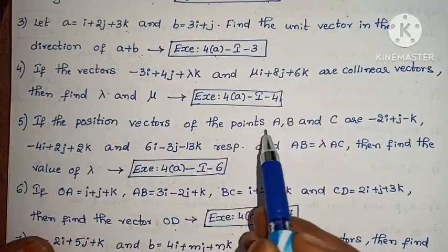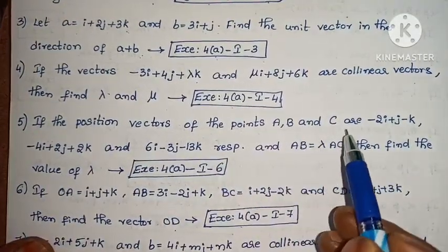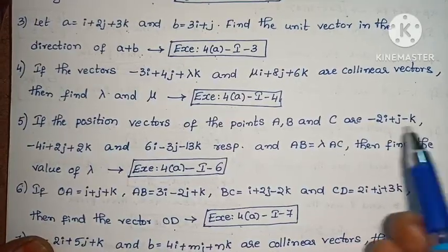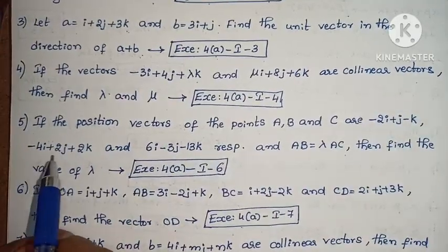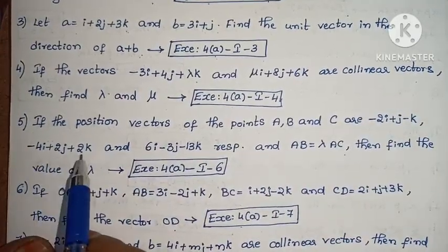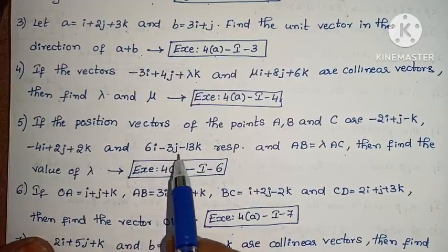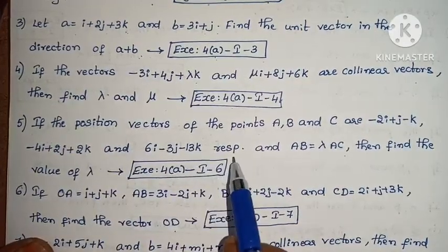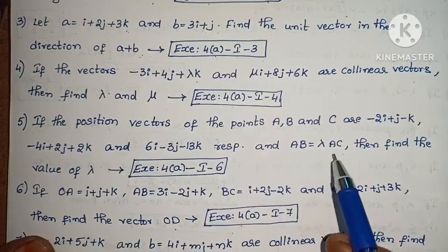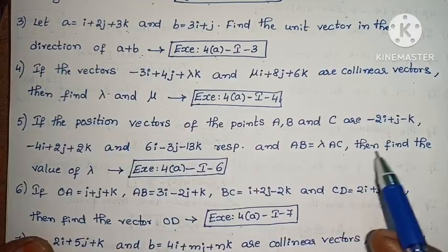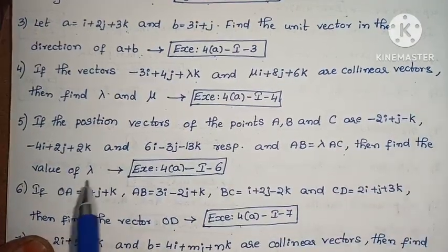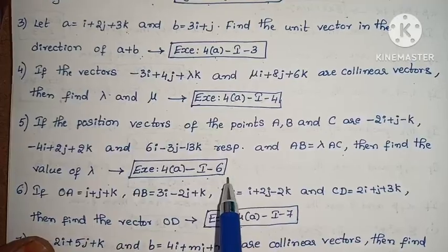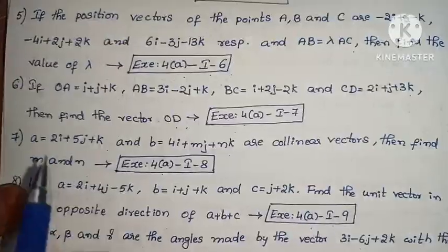Next: If the position vectors of the points A, B and C are minus 2i + j minus k, minus 4i + 2j + 2k, and 6i minus 3j minus 13k respectively, and AB equals to λ times AC, then find the value of λ. Exercise 4A, problem 6.